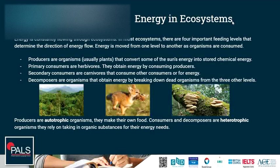Producers are the organisms, usually plants, that convert some of the sun's energy into stored chemical energy in the form of glucose and carbohydrates. Primary consumers are herbivores — they obtain energy by consuming producers. Secondary consumers are usually carnivores or omnivores that consume other consumers for energy. Decomposers are organisms that obtain energy by breaking down dead organisms or waste products from other organisms.